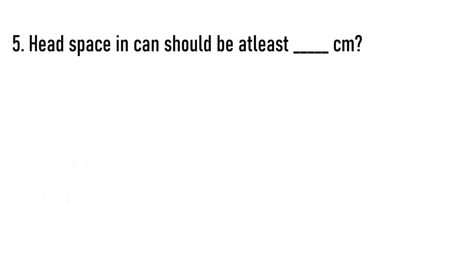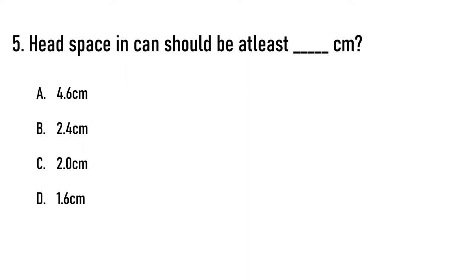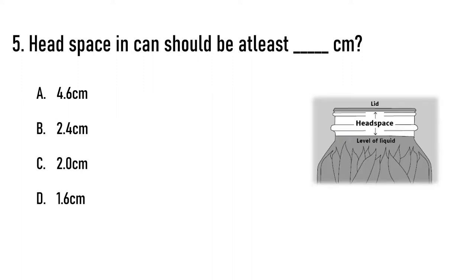Headspace in a can should be at least dash centimeter. Options are A) 4.6 cm, B) 2.4 cm, C) 2 cm, D) 1.6 cm. The correct answer is option D, 1.6 centimeter.